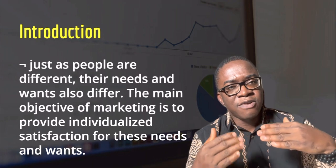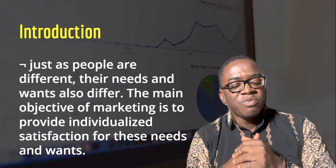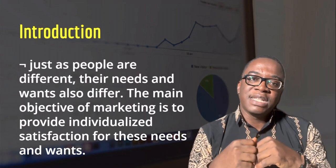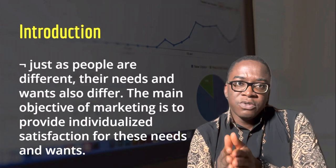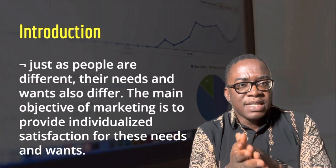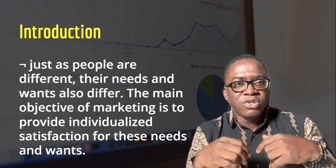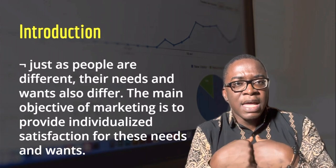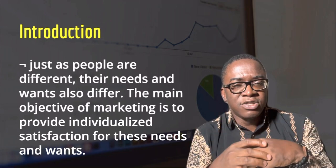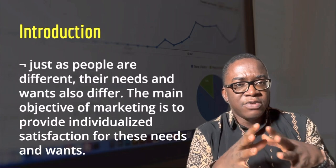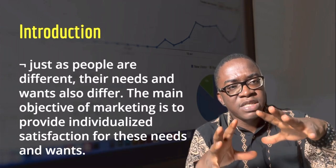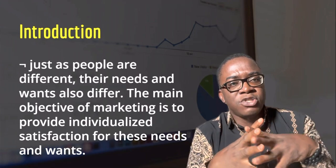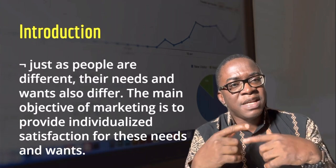Based on these differences in customer needs and wants, the main objective of marketing is to provide individualized satisfaction. If a particular customer wants fried rice, you give them fried rice. If another wants white rice with stew, you give it to them. Although the ultimate objective is to eat and satisfy hunger, what they want to use to satisfy that hunger can be different. You must pay attention to all these different variables so that you can satisfy them in their individualized form. It is only through this that you will be able to create extensive, sustainable customer loyalty — they will come back because at the first interaction, you gave them exactly what they wanted.